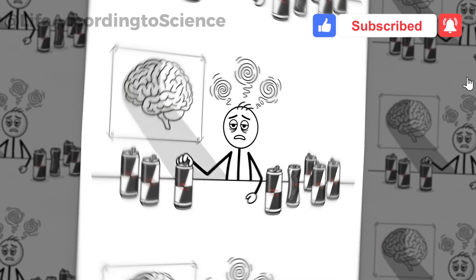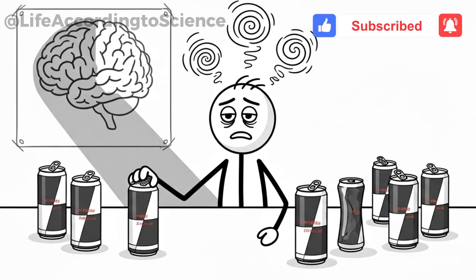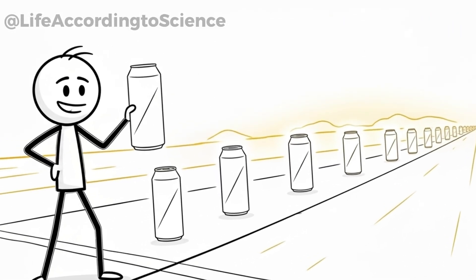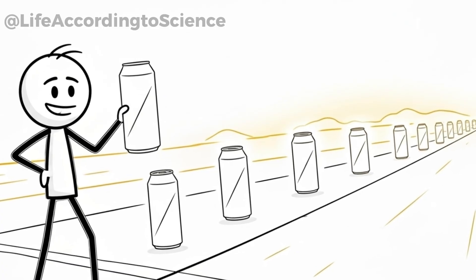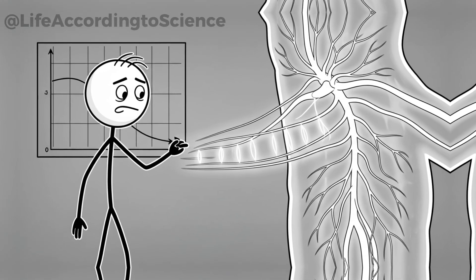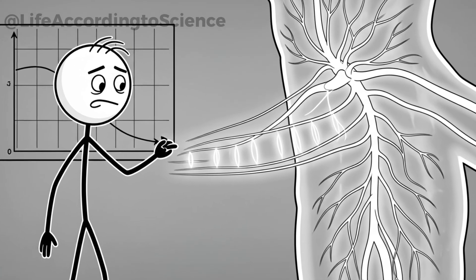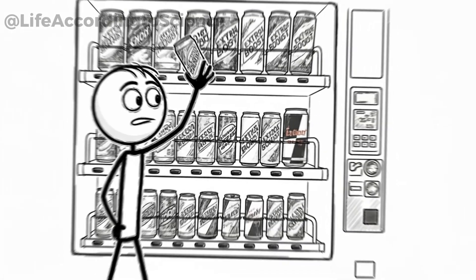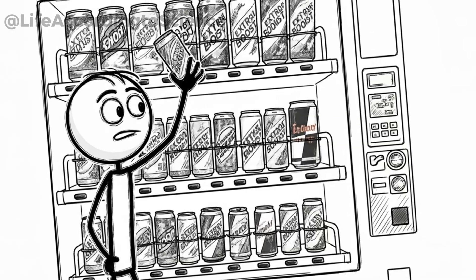At the beginning of your 30-day experiment, energy drinks feel powerful. But the human body is a master of adaptation. With daily use, your nervous system begins to build tolerance to caffeine, meaning the same amount produces a weaker effect. As tolerance builds, you may find yourself reaching for stronger brands or larger cans just to feel normal. This is where the danger lies. What started as a single can a day can turn into a dependency.